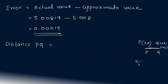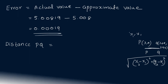To find the distance between the two points, we use the distance formula: √((x₂ − x₁)² + (y₂ − y₁)²), where (x₁, y₁) = P(3, 4) and (x₂, y₂) = Q(3.04, 3.98).